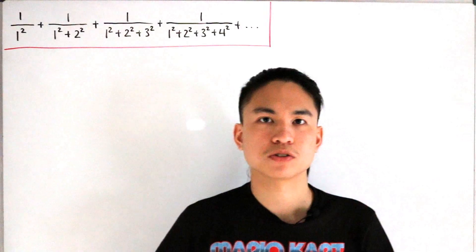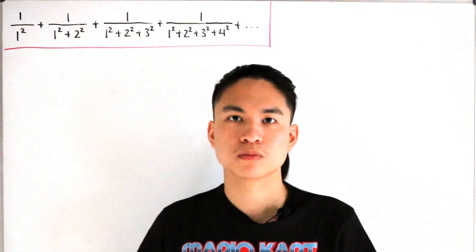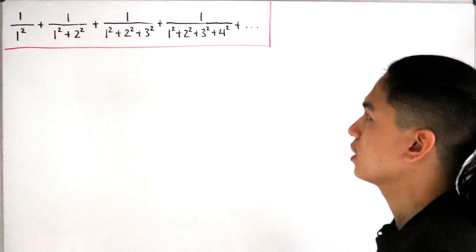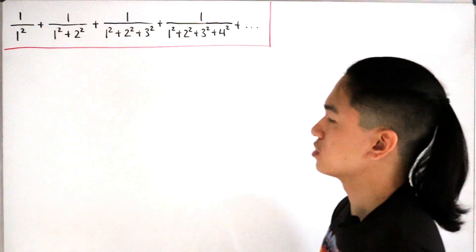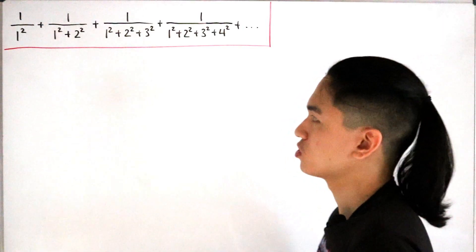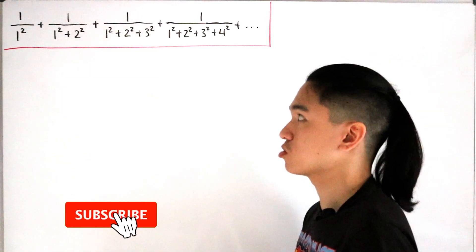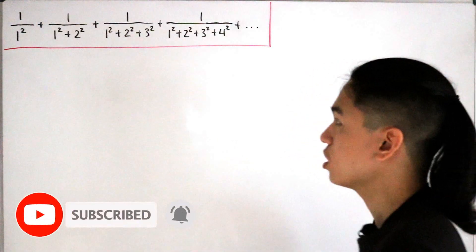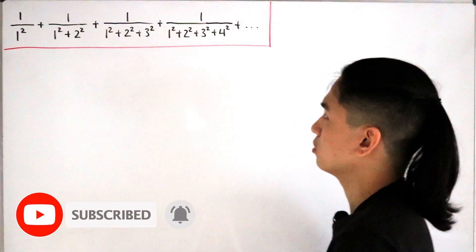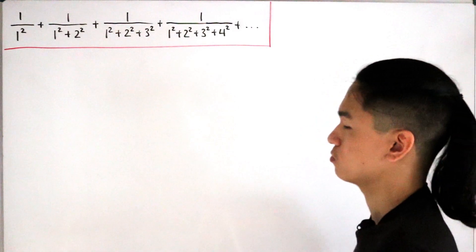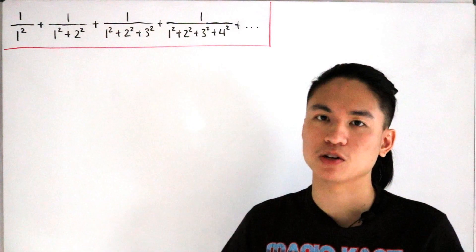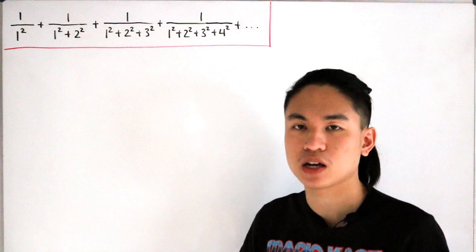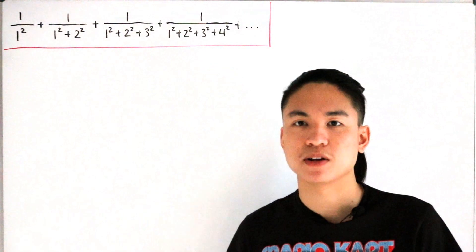Welcome back to another video. Today we have an infinite sum in the form of 1/(1²) + 1/(1²+2²) + 1/(1²+2²+3²) + 1/(1²+2²+3²+4²), adding up continuously in the same form infinitely many times. The question is: what is the value of this entire summation?